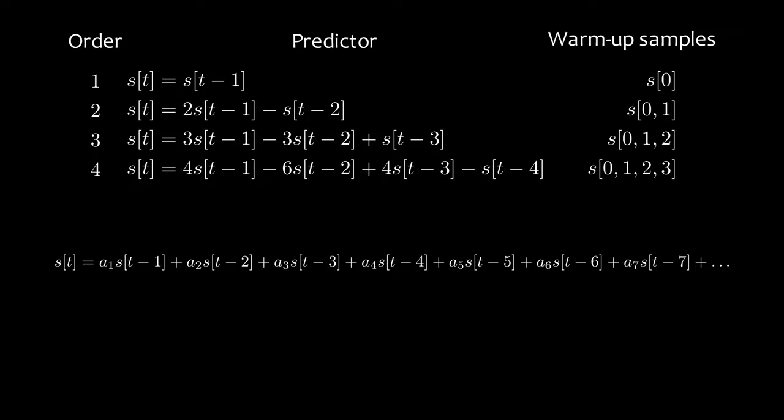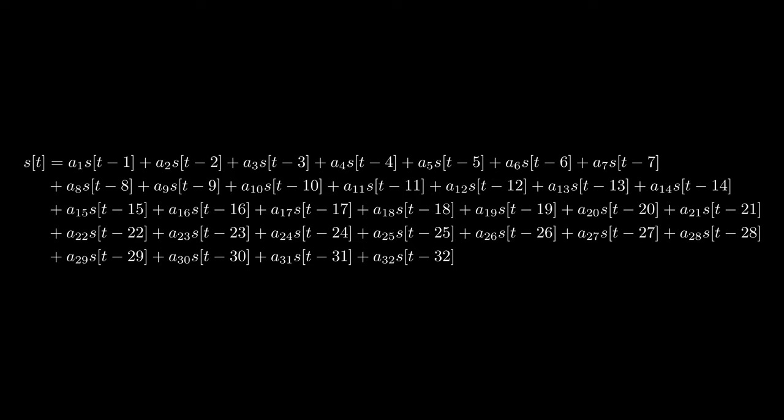So, of course, FLAC supports them. The highest order we can go to is 32. I have to mention, though, that this is extremely computationally intensive, especially for encoding. Choosing predictor order and coefficients for arbitrary LPC involves way too much linear algebra. On the other hand, the polynomial predictors are so cheap that you can just encode with all five of them and pick the one that compresses best.